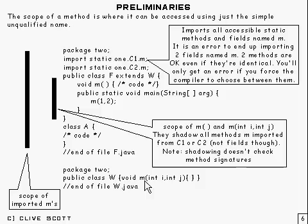And there's another method M there, and the scope of that is the body of W. And also because F extends W, the scope is also the body of F down there, because it's accessible within this class F.